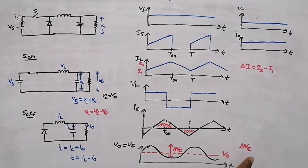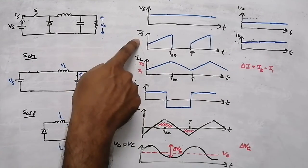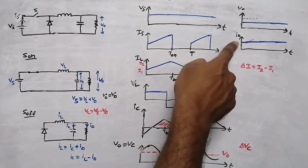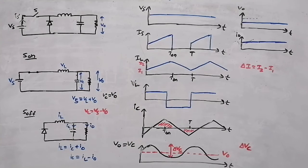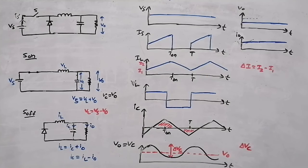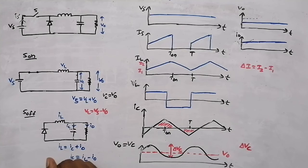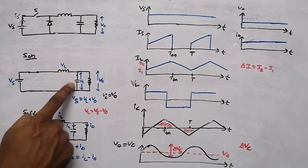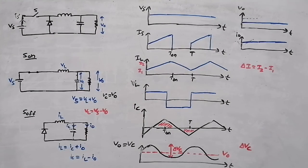In total, there are three circuits and eight waveforms to understand: source voltage, source current, output voltage, output current, inductor current, inductor voltage, capacitor current, and capacitor voltage. In the next video, we will discuss the equations for finding ripple current, ripple voltage, and output voltage — which are essential for designing the inductor and capacitor values of the filter circuit.